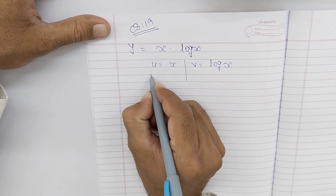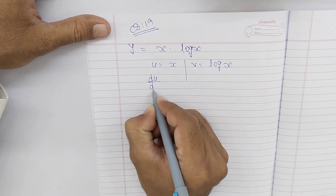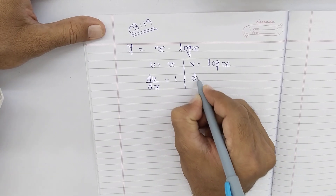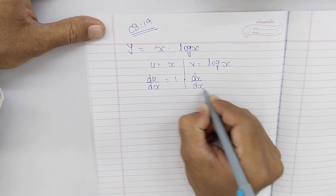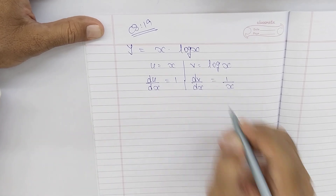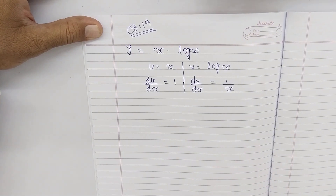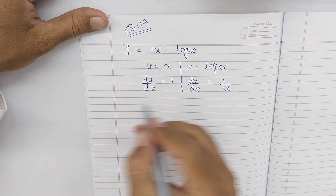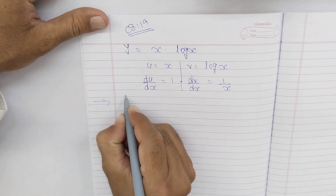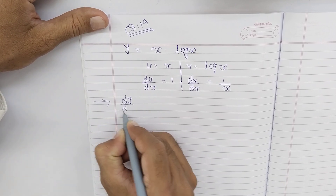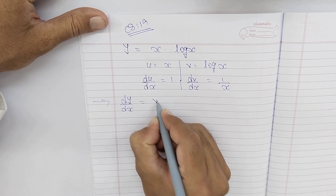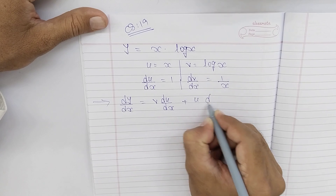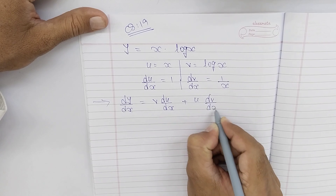So now, derivative of u with respect to x: x ka derivative 1 hota hai. Aur derivative of v with respect to x: log(x) ka derivative 1/x hota hai. Humne u aur v ke alag-alag derivatives kar diye. Ab formula likhenge: dy/dx = v·(du/dx) + u·(dv/dx).